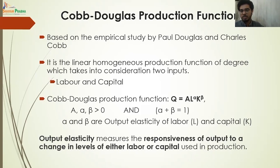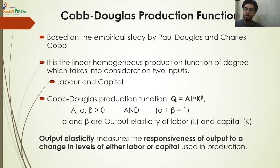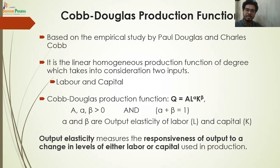There were certain other factors of production like technology and organization, but here we are discussing L and K, where L is labor and K is capital. So it's a linear homogeneous production function where two inputs contribute to the production process. The Cobb-Douglas production function is Q equals A times L to the power alpha times K to the power beta, where alpha and beta represent output elasticity of labor and capital respectively. The values of A, alpha, and beta should be greater than zero and less than one.